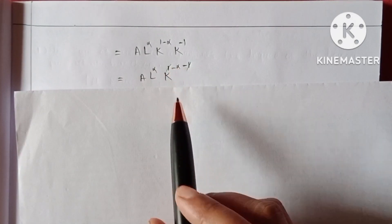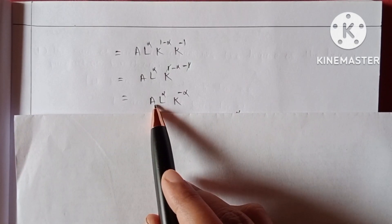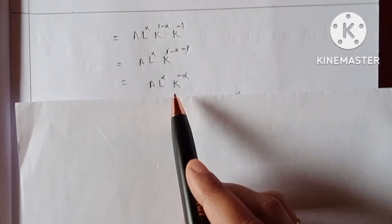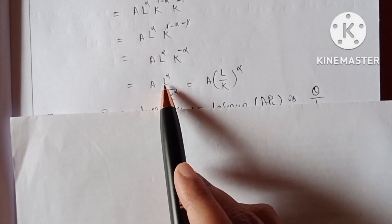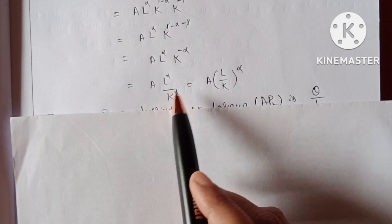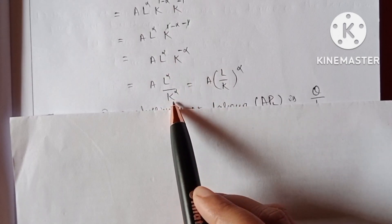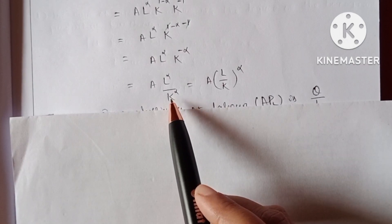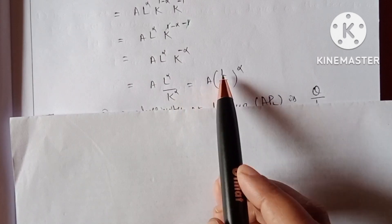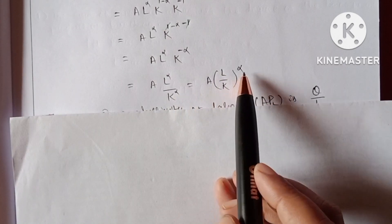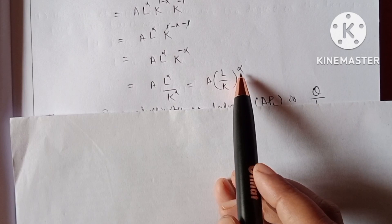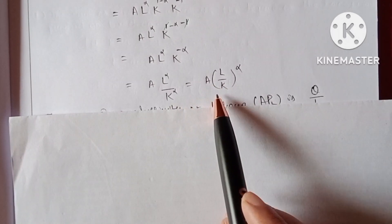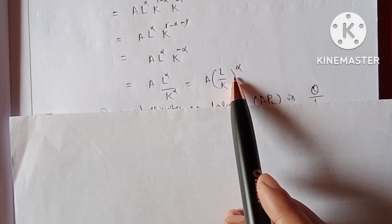After dividing, 1 minus 1 cancels, so we get A into L to the power alpha into K to the power minus alpha. We can rewrite K to the power minus alpha as 1 over K to the power alpha, so this equals A into L to the power alpha divided by K to the power alpha, which simplifies to A into (L/K) whole power alpha.